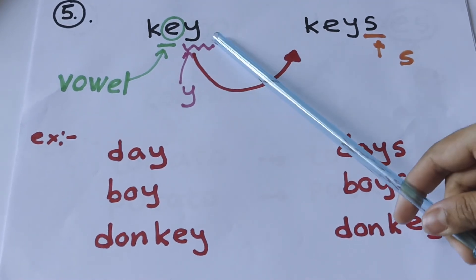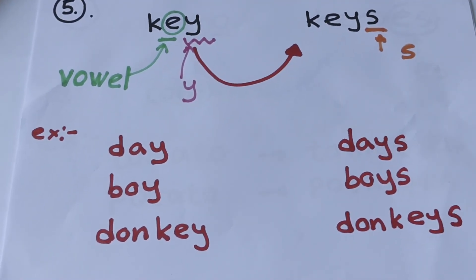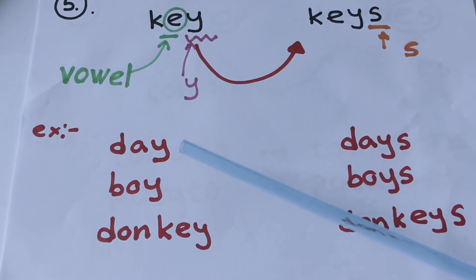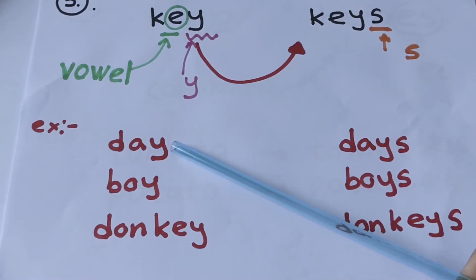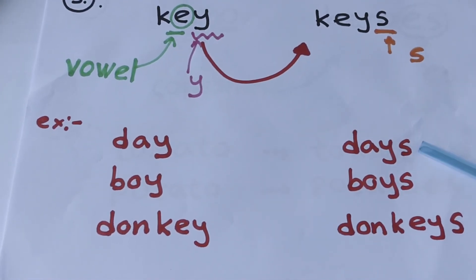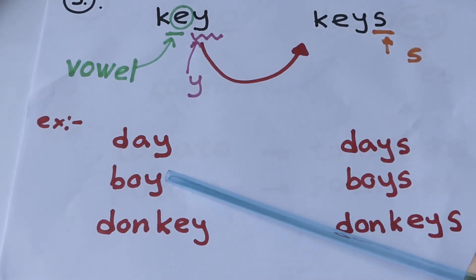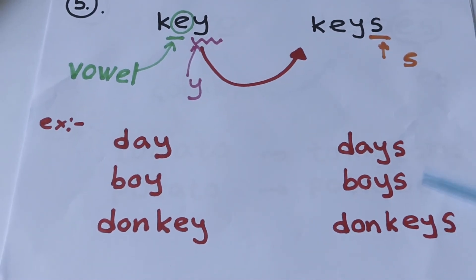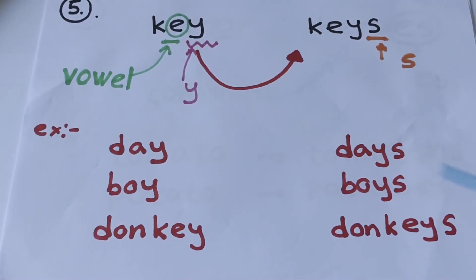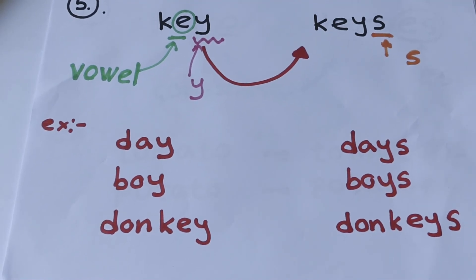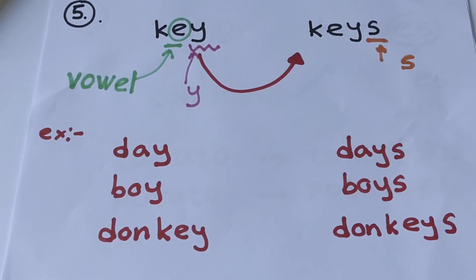Key, keys. Examples: day, days. Boy, boys. Donkey, donkeys. Understood?